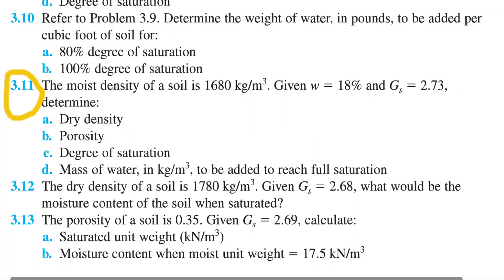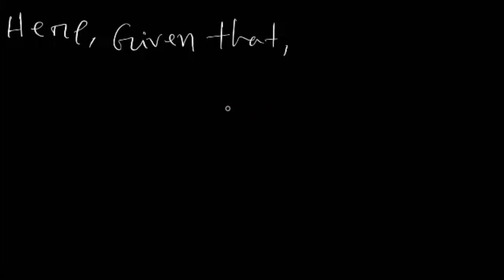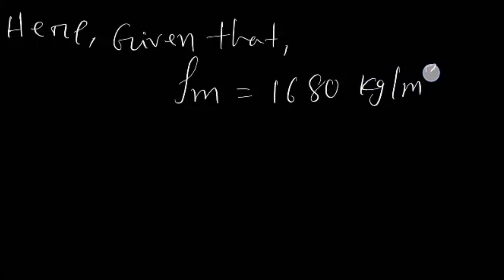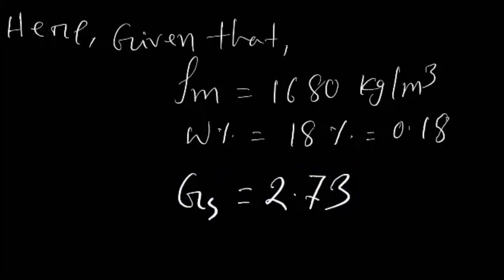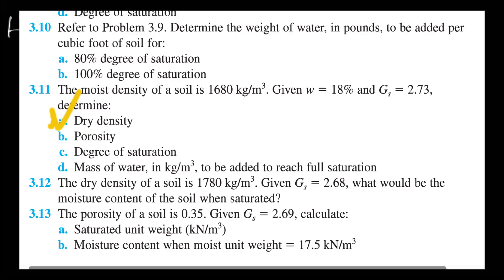I am solving this question — please focus. Given: moist density of soil is 1680 kg per meter cube, moisture content equals 18% which means 0.18, and specific gravity is 2.73. The first question is to find dry density.